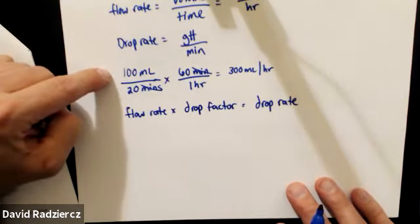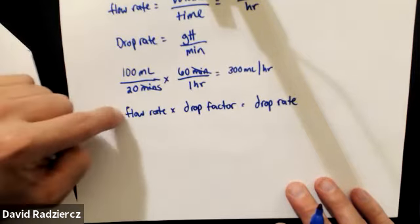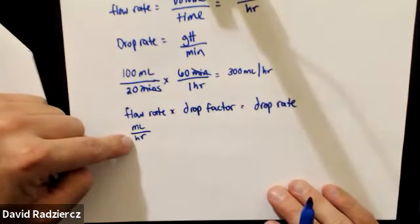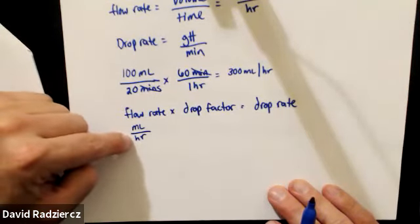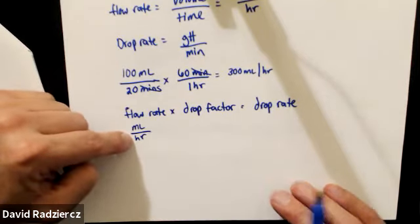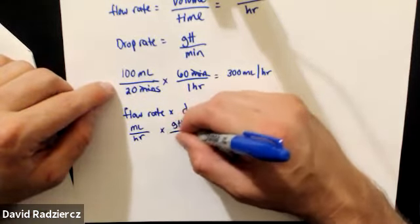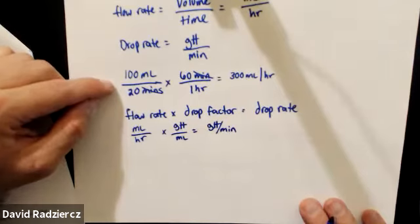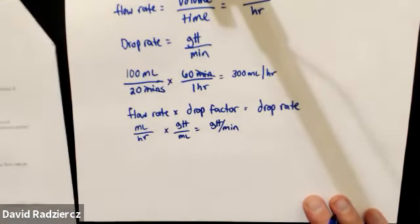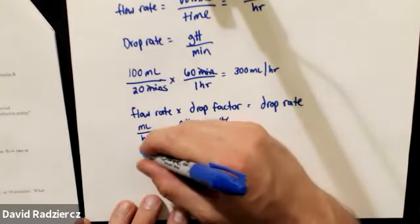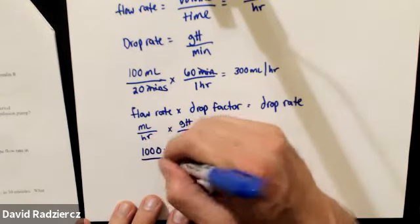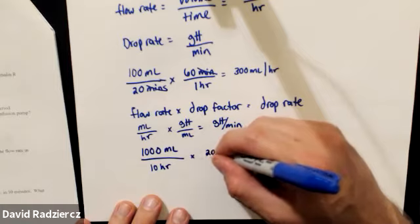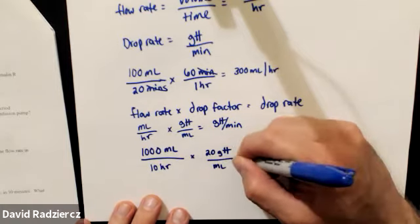Drop factor is always drops per milliliter; drop rate is always drops per minute. Flow rate is volume over time — sometimes hours, sometimes minutes. If it's in hours, convert to minutes. So 1,000 milliliters over 10 hours reduces to 100 milliliters per hour, which is 100 milliliters per 60 minutes, times 20 drops per milliliter.